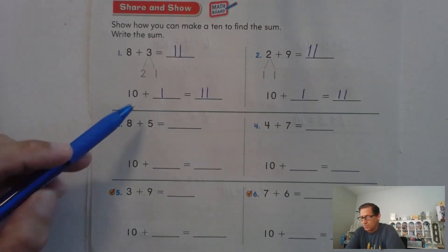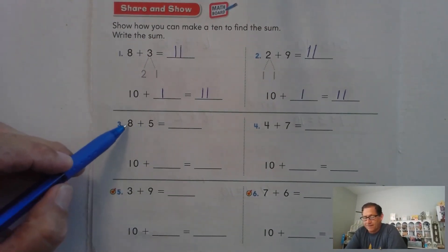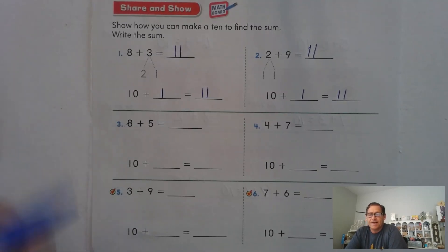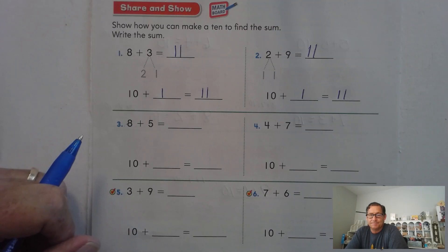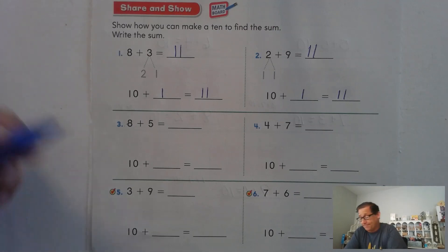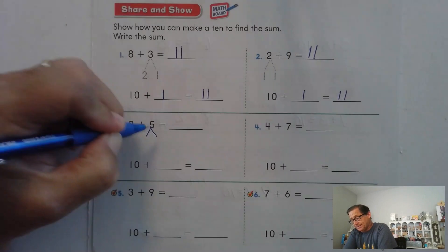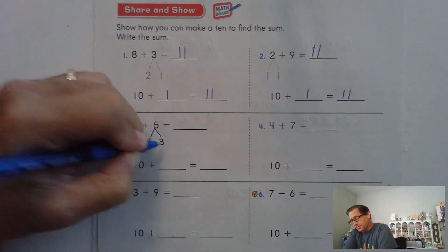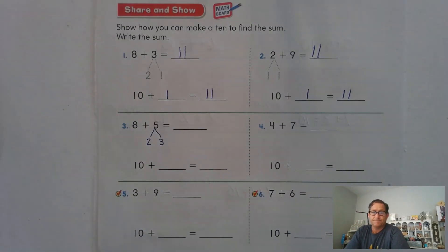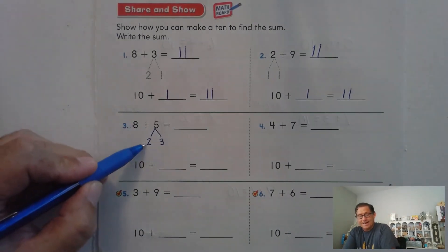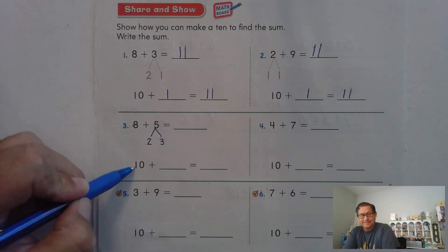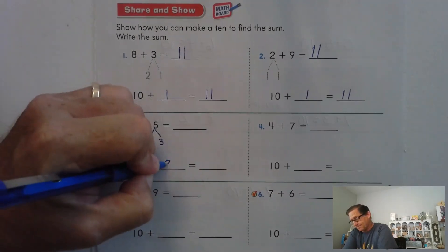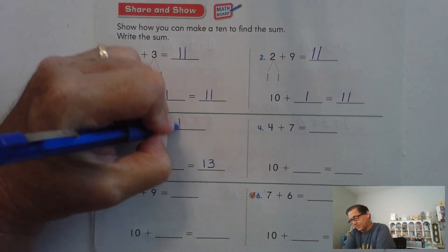Eight plus five. We can break the five up so that we can make a 10 from the eight. Eight plus what is 10? Eight plus two. So let's break the five into two and three. Eight plus two makes a 10, now we just have to add the three. And 10 plus three is 13.